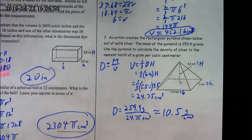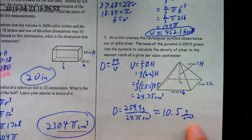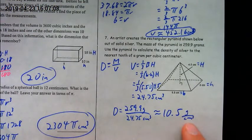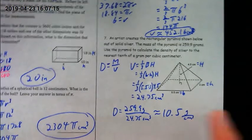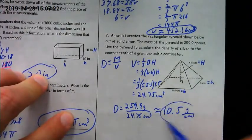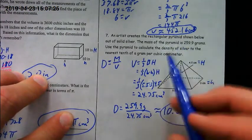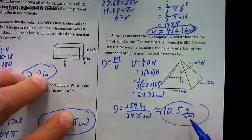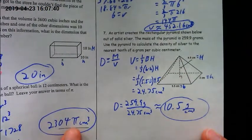Make sure you include units on your density answer. In science, units make a huge difference — grams versus kilograms changes everything. The units here are grams per cubic centimeter, written as g/cm³. That's part of your density answer, you must include the units.